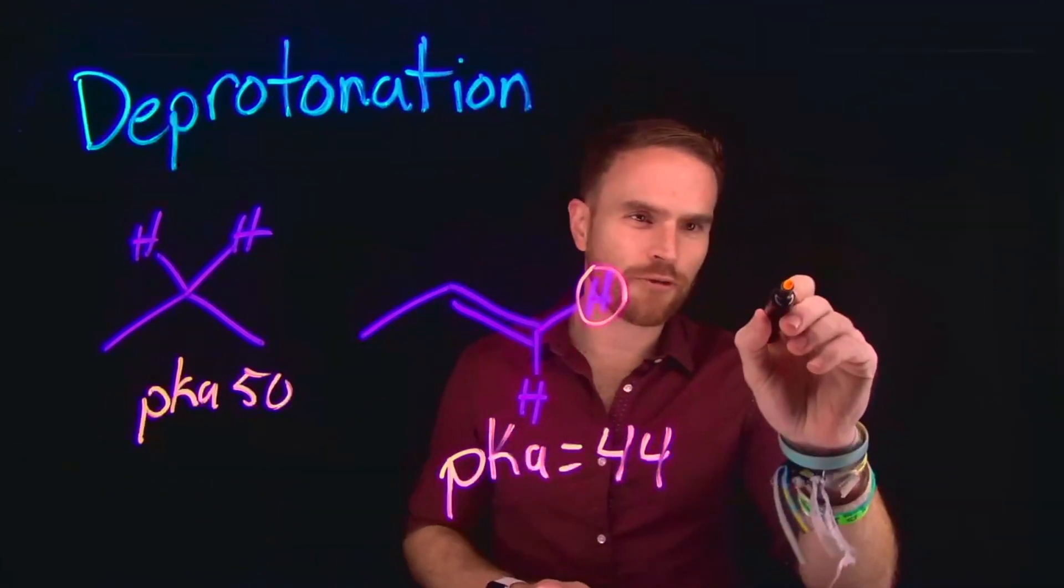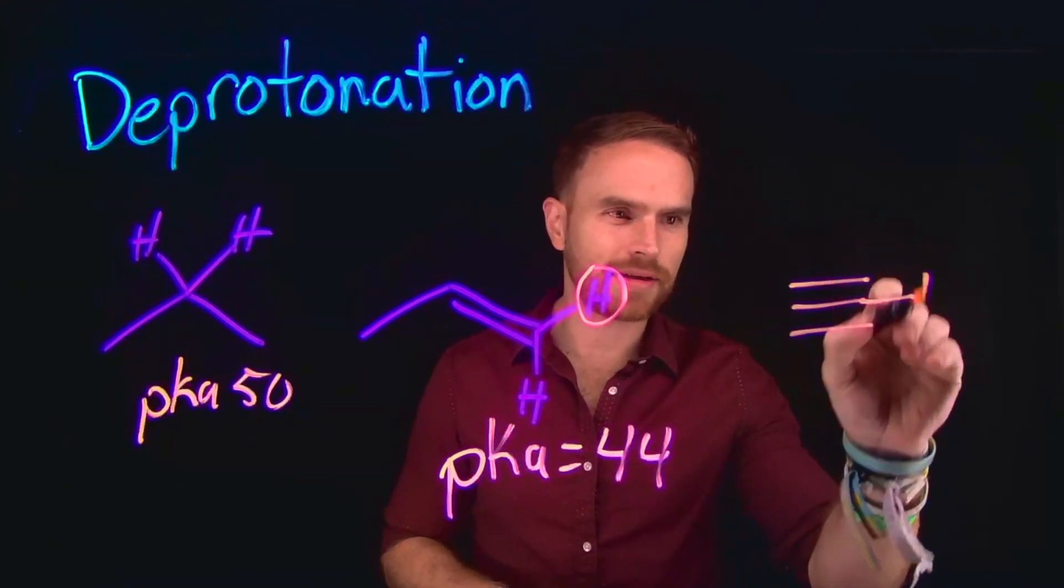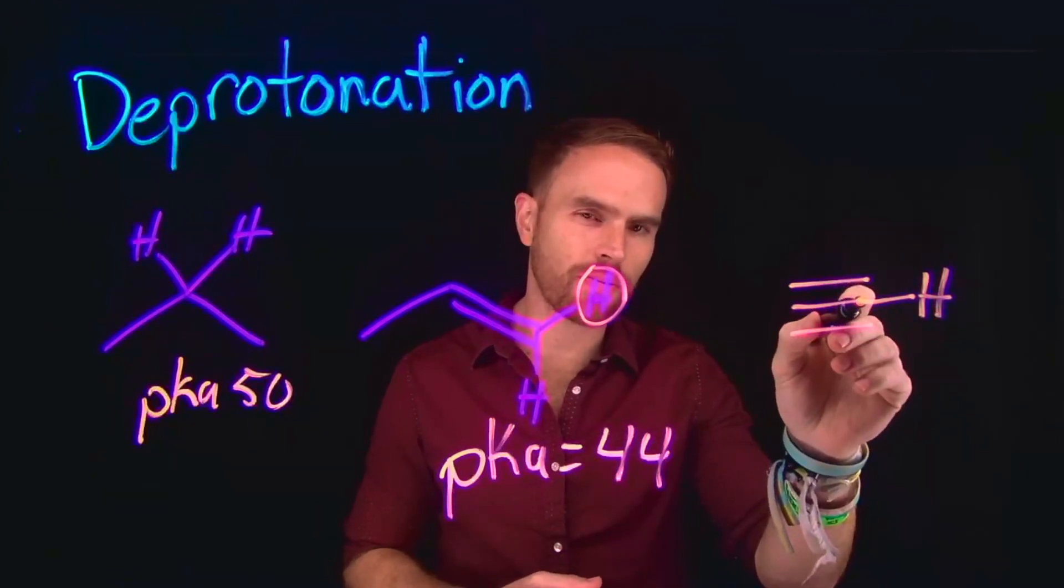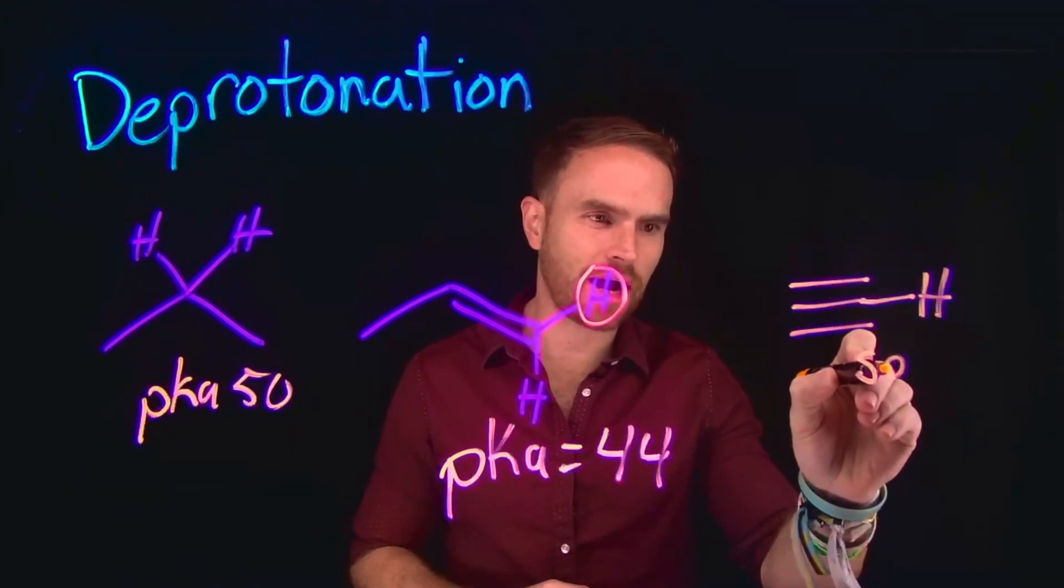Now let's consider for a moment the terminal hydrogen on an alkyne. Importantly, we are increasing the S character. Remember that this carbon position is SP hybridized.